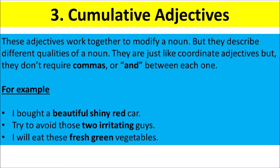Cumulative Adjectives. These adjectives work together to modify a noun, but they describe different qualities of a noun. They are just like coordinate adjectives but they don't require commas or 'and' between each one. For example, I bought a beautiful shiny red car. Try to avoid those two irritating guys. I will eat these fresh green vegetables.